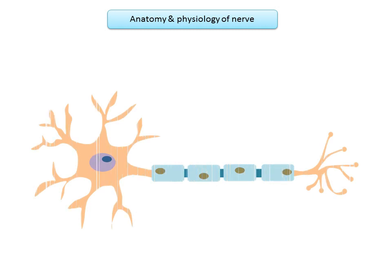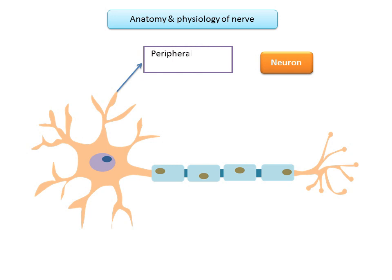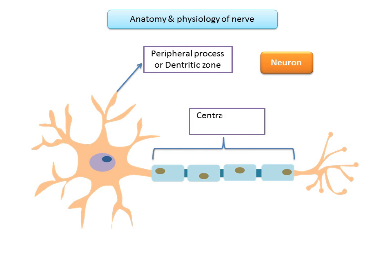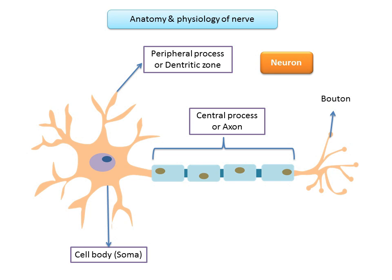To better understand the action of local anesthetics, let's get acquainted with the fundamentals of nerve conduction. The neuron or nerve cell is the structural unit of the nervous system. It is able to transmit messages between the CNS (central nervous system) and all parts of the body. A neuron is made up of basically three parts: the peripheral process, also known as the dendritic zone, composed of an arborization of free nerve endings; the axon, a long cylinder of neural cytoplasm encased in a thin sheath called the nerve membrane or axolemma; and the cell body.